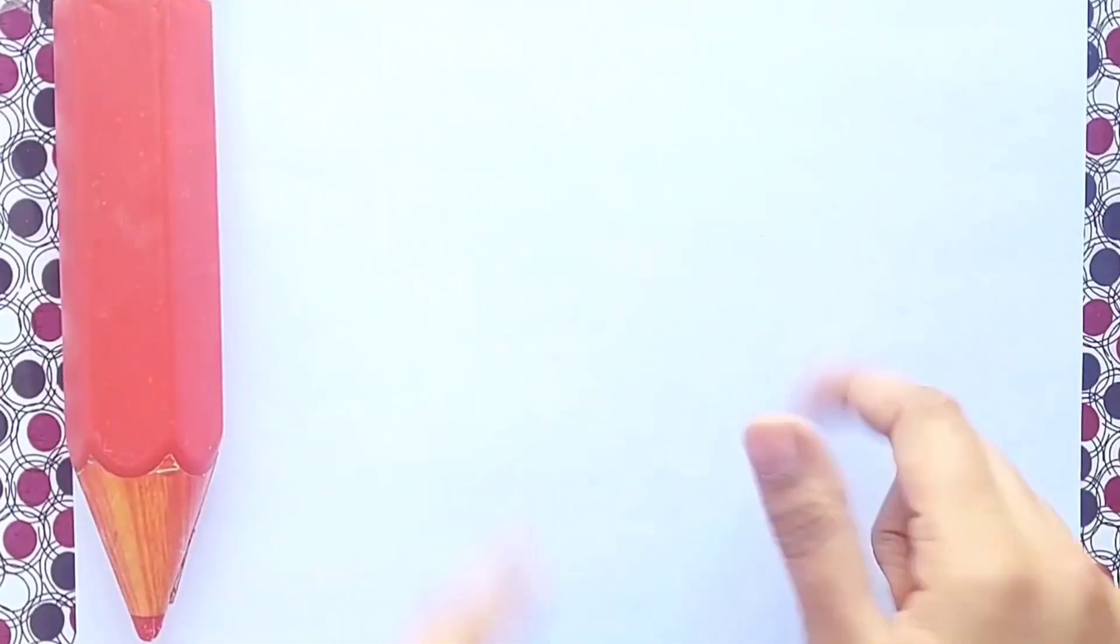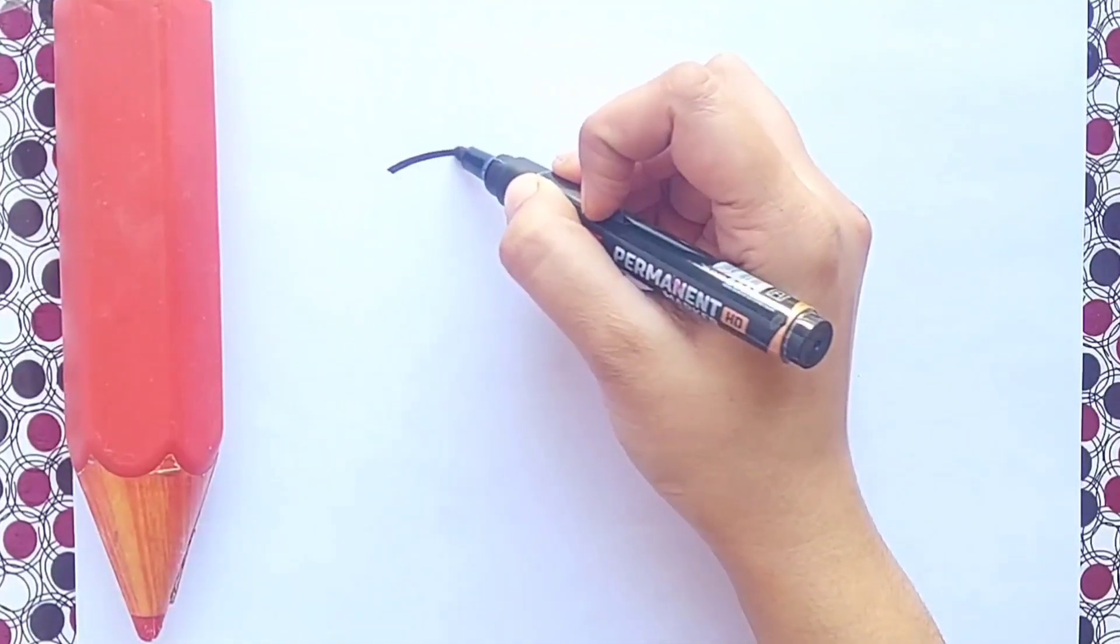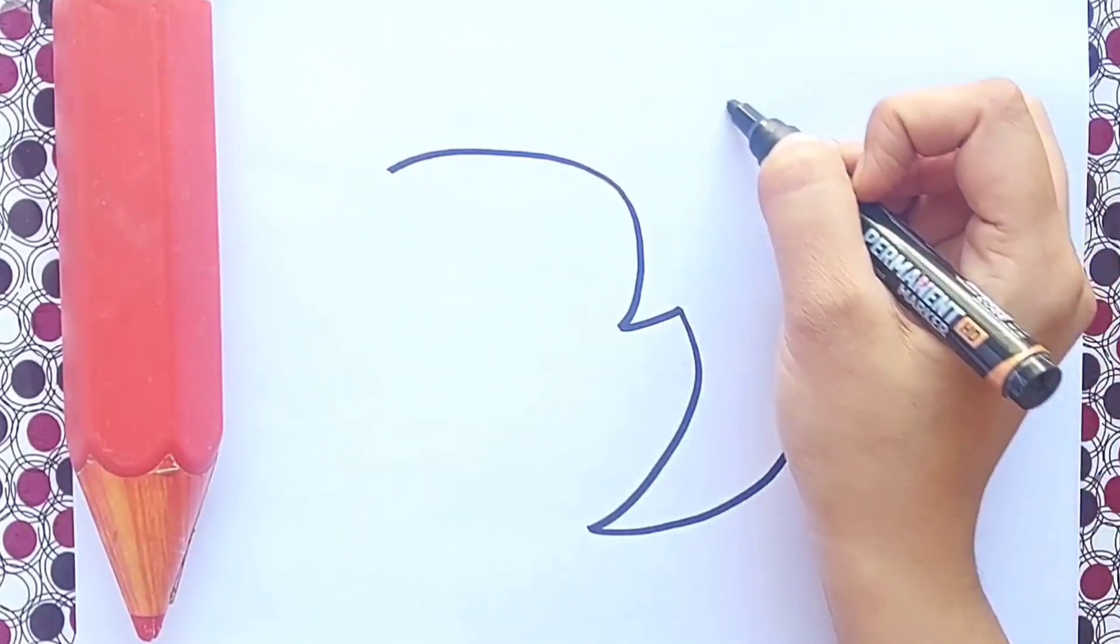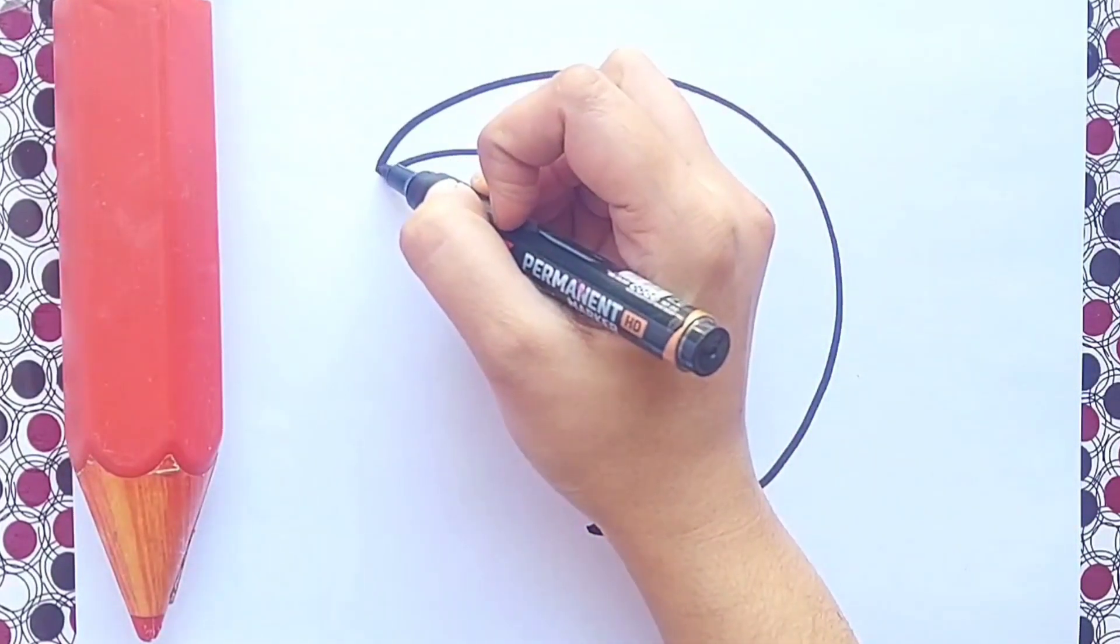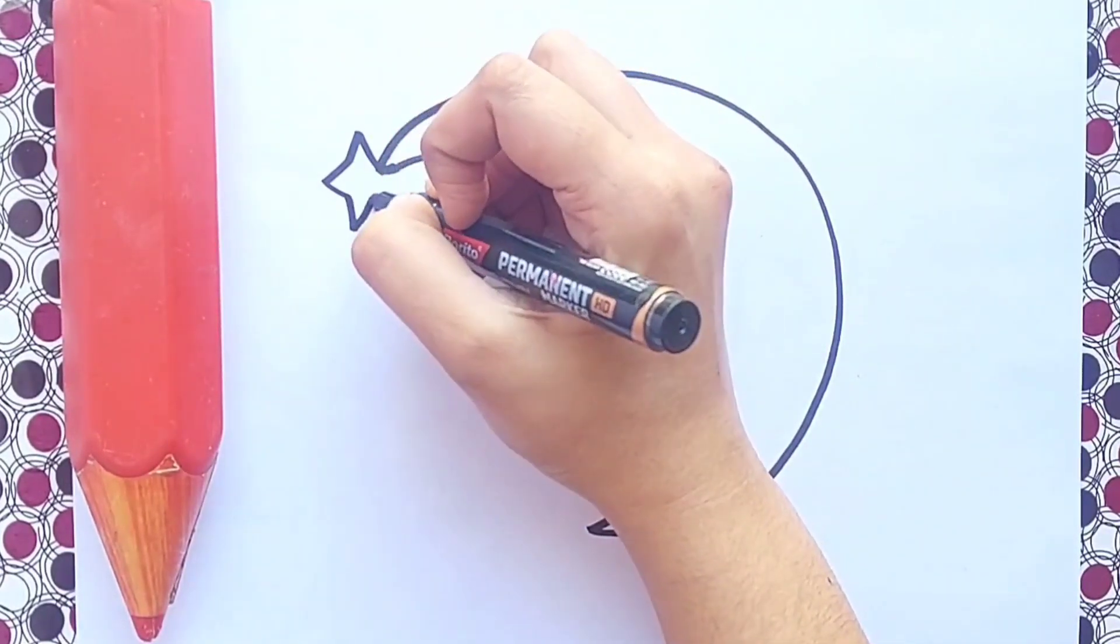Hello kids, today we will learn how to draw a moon and a star. Let's get started! First I will draw our moon. Draw with me kids, grab your pen and paper and start drawing with me. Follow the instructions.